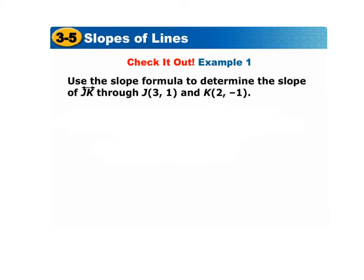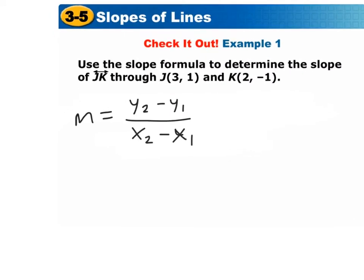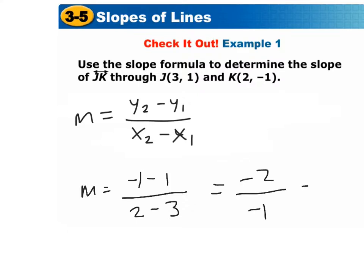Use the slope formula to determine the slope of JK. The slope formula is y2 minus y1 over x2 minus x1. Our y2 is negative 1, y1 is 1, x2 is 2, and x1 is 3. So we get negative 1 minus 1 over 2 minus 3, which is negative 2 over negative 1. That simplifies to 2. So the slope of line JK is 2.